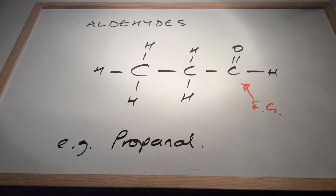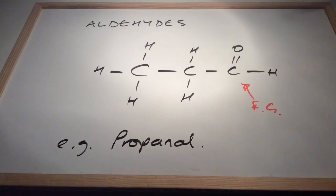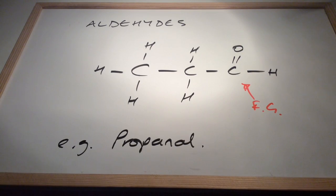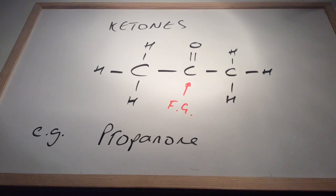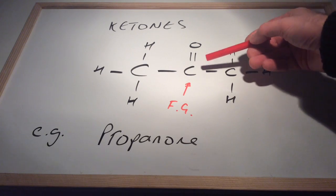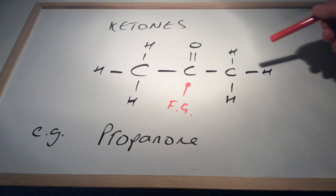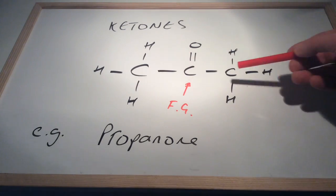Moving on to the aldehydes, we've got propanal, and the functional group is C double bond O with a hydrogen attached. Very similar to the aldehydes, we've got the ketones — propanone. The difference between a ketone and an aldehyde is that in a ketone the C double bond O functional group is within the carbon chain, whereas in the aldehyde it is at the end of the carbon chain with a hydrogen attached.